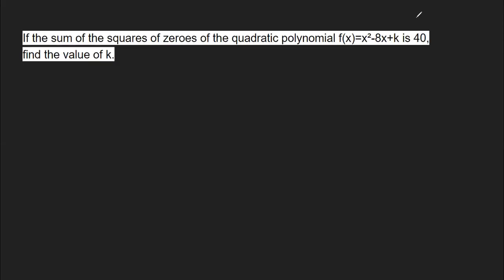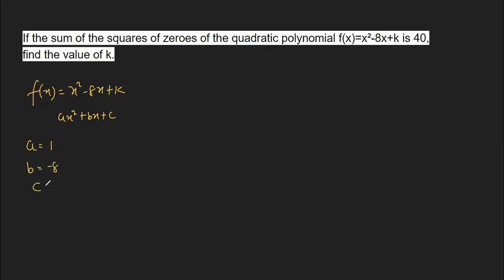Hello everybody. Here we have a question: if the sum of the squares of the zeros of the quadratic polynomial f(x) = x² - 8x + k is 40. Let's write it down first. We check whether it is in standard form — x², then x, then a constant — yes, it is already in standard form. Comparing with ax² + bx + c, we get a = 1, b = -8, and c = k.